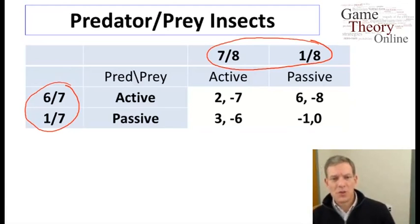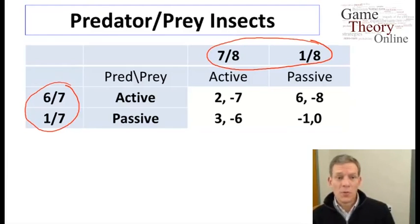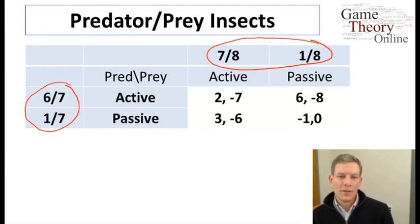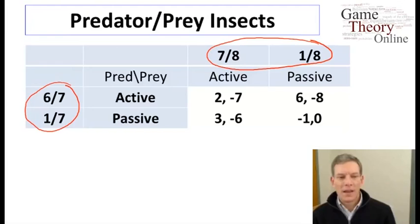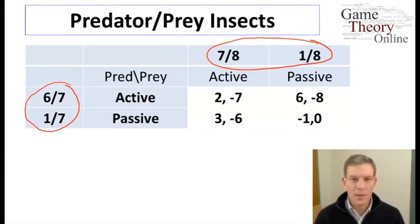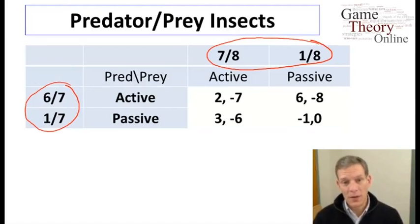To discuss interpretation: one way to interpret this is not necessarily that any particular prey randomizes with some probability, but that when predators meet different kinds of prey, 7/8 of the ones they meet are active and 1/8 are passive. What matters is that the expected strategy each player faces has these particular probabilities in order to balance and be in equilibrium. How we interpret this can vary depending on the application, and we'll talk more about interpretations of mixed strategies as we go along.